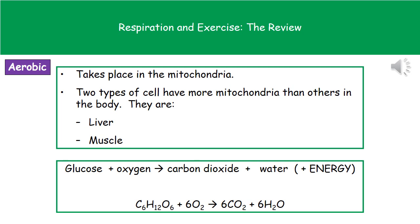First of all, aerobic respiration takes place inside the mitochondria, which if you remember are one of the organelles present in all of those animal cells. We've got two types of cell that have more mitochondria than others in the body, and those are the liver and muscle cells. The reason for that is because the liver and the muscles actually need more energy, and because the mitochondria are the site of aerobic respiration, that means they can generate more energy.